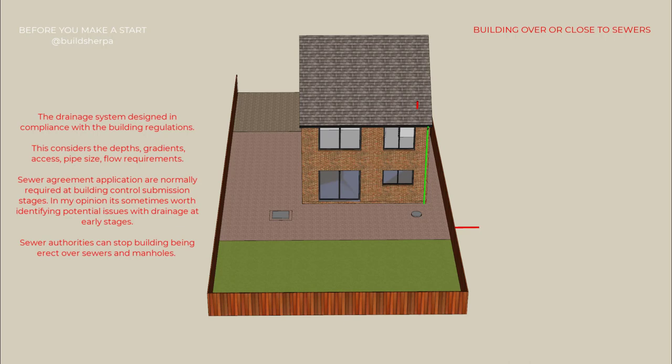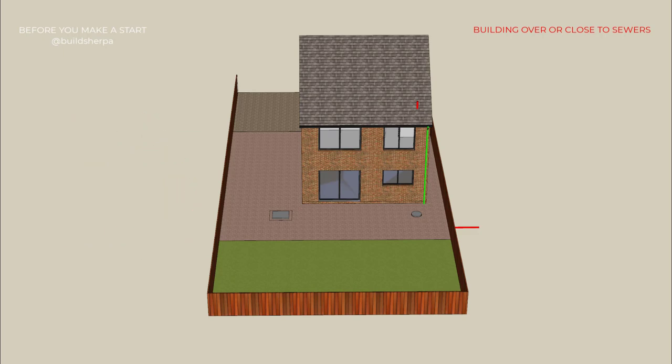Sewer agreement applications are normally required at building control submission stage. In my opinion, it's sometimes worth identifying potential issues with drainage at early stages, as the sewer authorities can stop buildings being erected over sewers and manholes regardless of planning permission if it wasn't checked early on. Sewer pipes around the property are normally up to around 2 to 5 inches — that's 9 inches. When sewers over these sizes are present, standoff distances come into play, meaning you may not be able to build within a certain distance of the sewer, for example 5 metres. Some investigation into the drainage system and manhole positions early in the project can prevent delays.